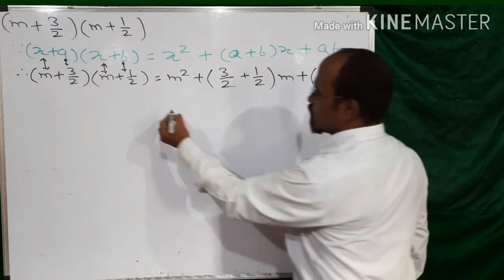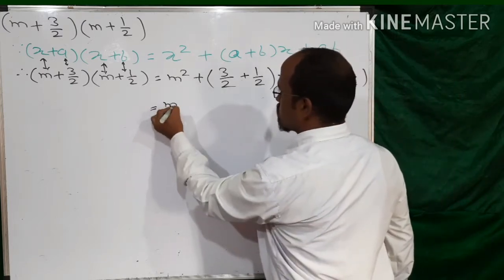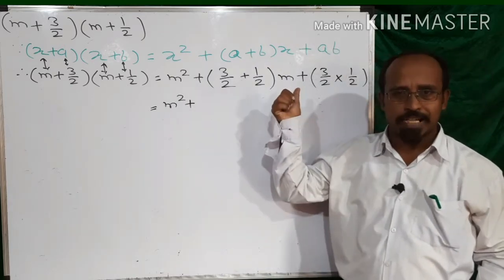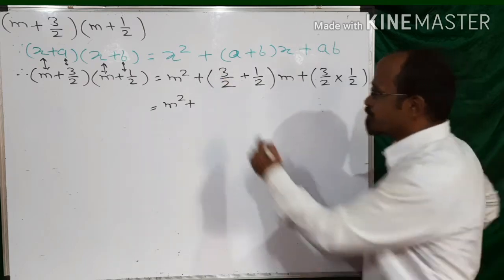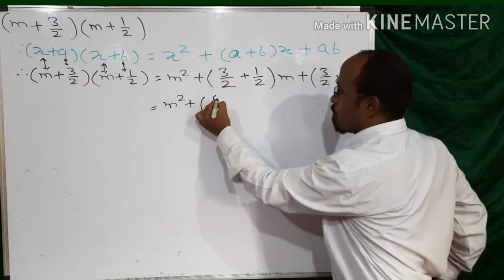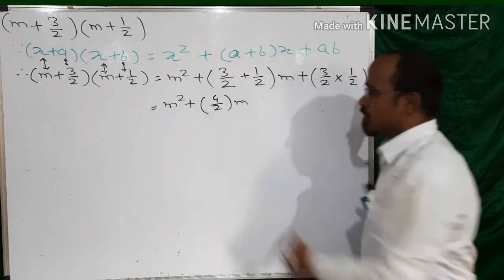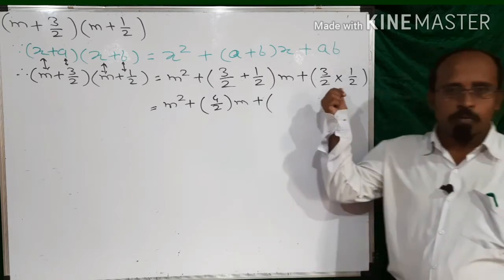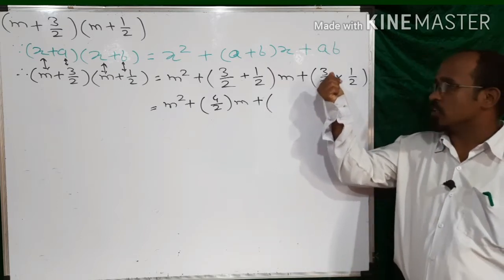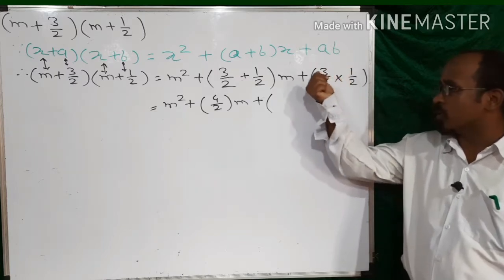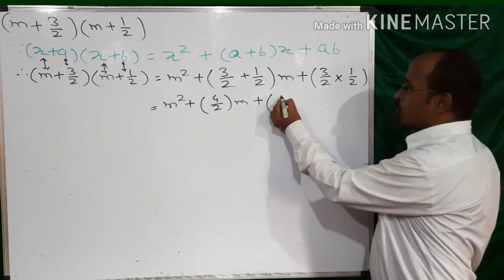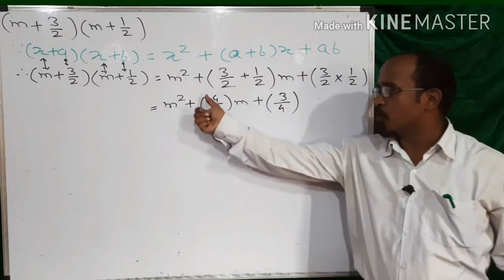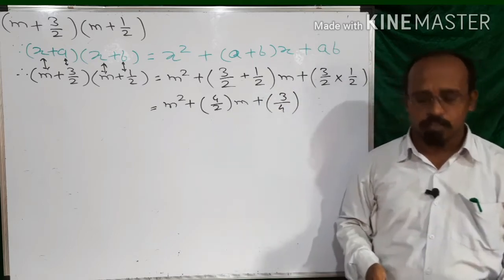Now let's solve it. That equals m². The denominator is the same, so we can add directly: 3 + 1 = 4, giving 4/2 into m. Plus, for multiplication of fractions, multiply numerator by numerator and denominator by denominator: 3 × 1 = 3, 2 × 2 = 4, giving 3/4. So m² + 4/2·m + 3/4 is our answer.